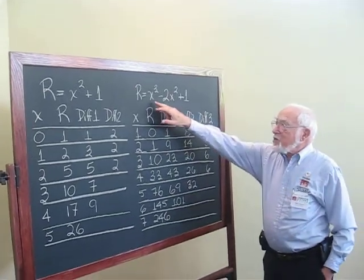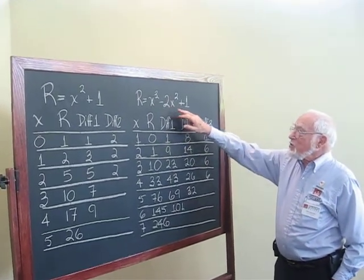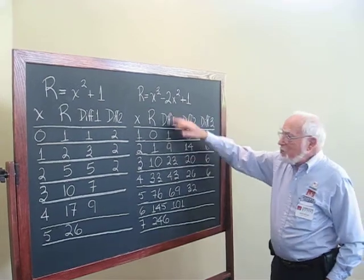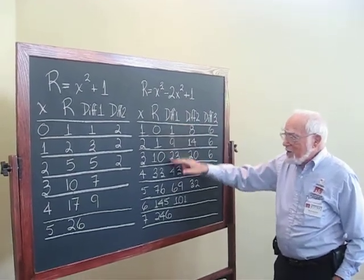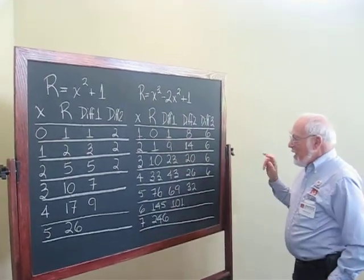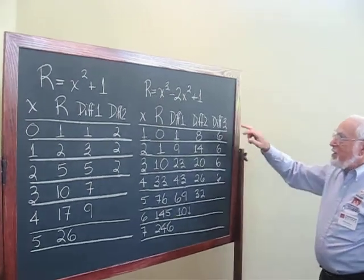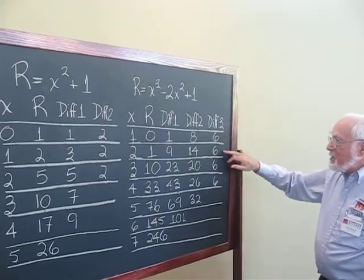Here, the expression is x cubed minus 2x squared plus 1. And I just won't go through it. Take my word for it that these are all correct. Now, here is the point. The third difference now is a constant at 6.